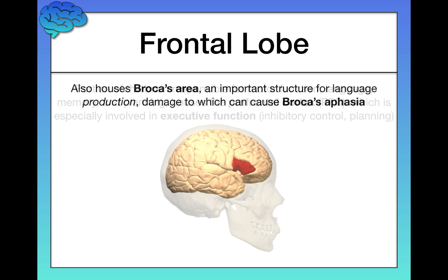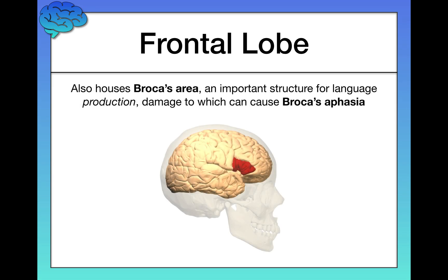The frontal lobe also houses Broca's area, which is important for language production — keep in mind production, not comprehension. We'll get to Wernicke's area, which handles comprehension, shortly. Broca's area is specifically about the ability to speak out loud and get the words out that you want to say. If someone has damage to Broca's area, they end up with what's called Broca's aphasia.